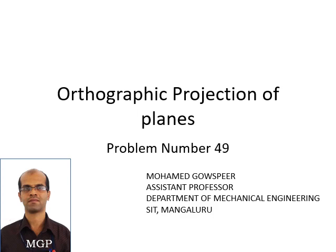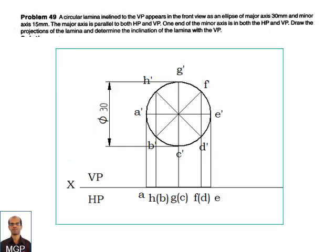Hello everyone. Today's topic is orthographic projection of planes, and we learn problem number 49. The question given: a circular lamina inclined to the VP appears in the front view as an ellipse of major axis 30 mm and minor axis 15 mm. The major axis is parallel to both HP and VP. One end of the minor axis is in both HP and VP. Draw the projections of the lamina and determine the inclinations of the lamina with VP.